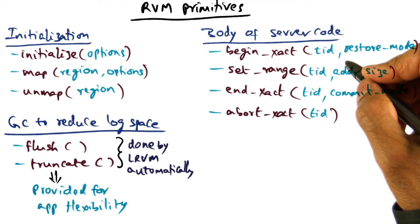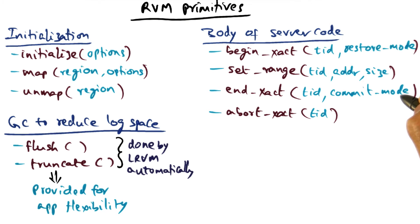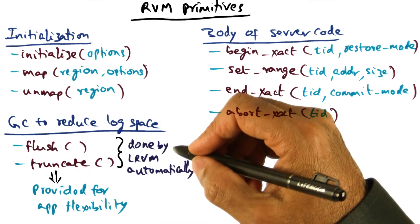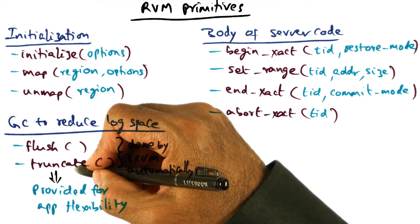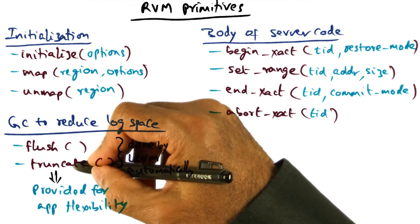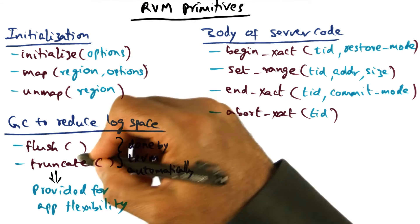Shortly, we will mention some optimizations specified through the commit mode to the RVM library by the application programmer to enhance performance. One of those optimization features allows RVM to defer flushing to the disk at the point of commit. The developer can tell RVM not to flush the changes to the log segment at the commit point yet, and instead take care of it explicitly by flushing. These additional primitives are for developers to explicitly control flushing of the logs to the disk and also manage truncation of the logs by explicitly applying them to the external data segments to conserve space.